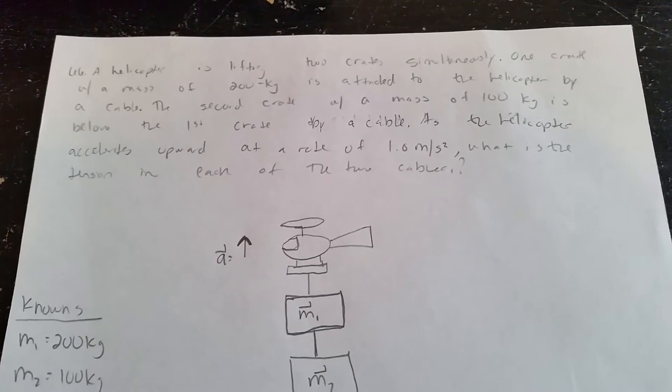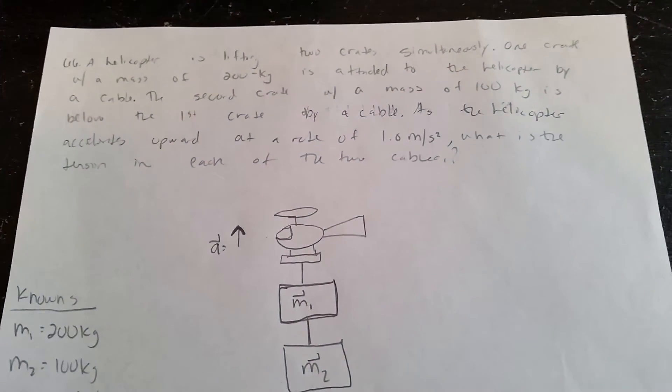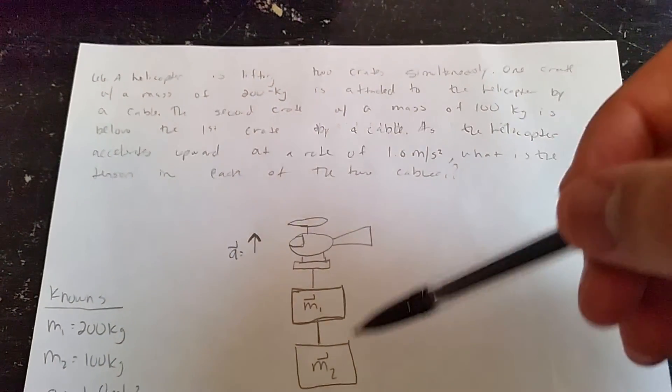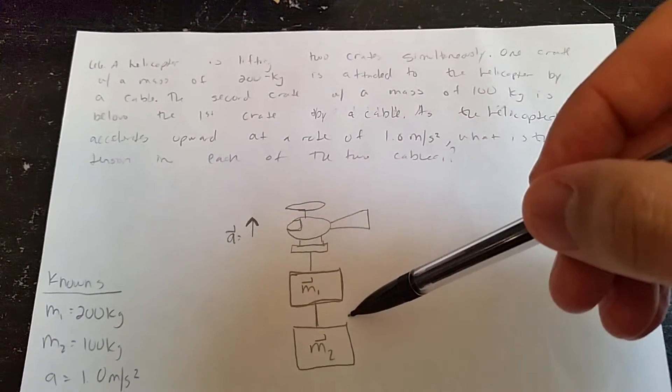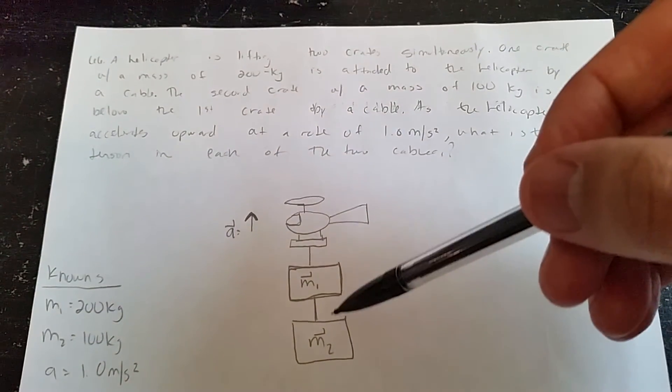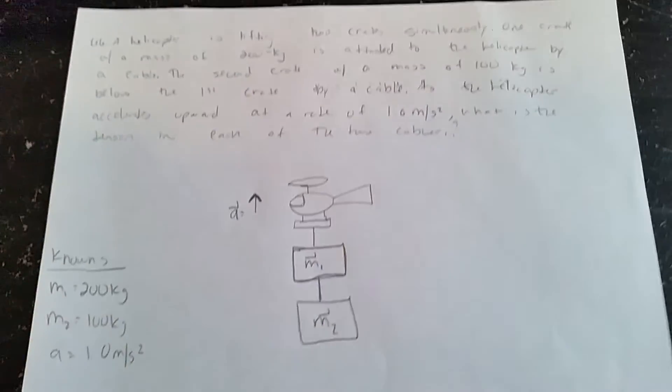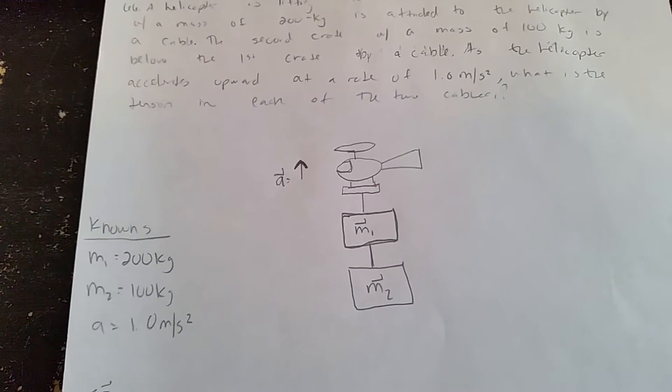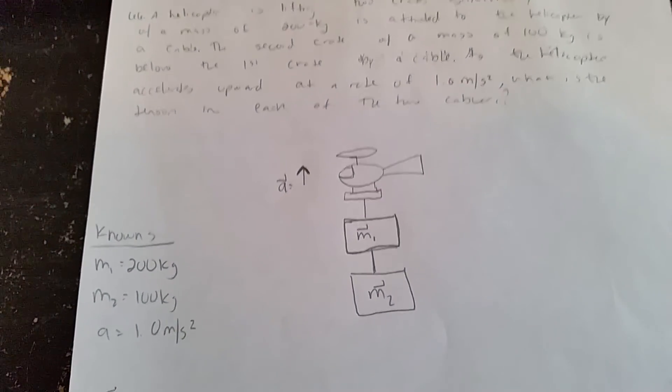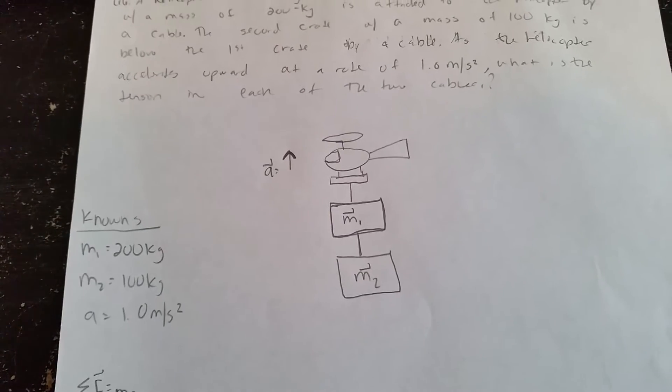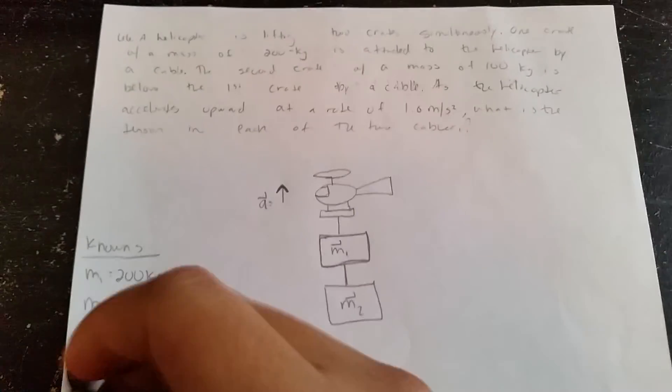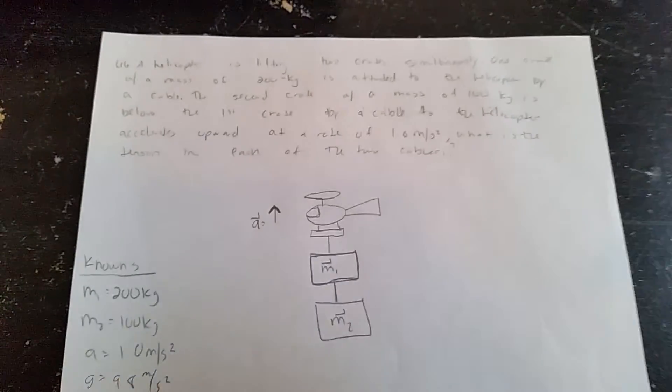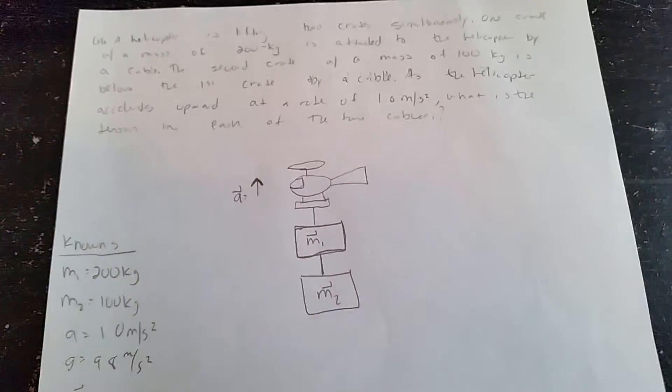What is the tension in each of the two cables? So we're looking for tension in one and then the second tension right here between mass one and mass two. So I have my known values here: mass one is 200 kilograms, mass two is 100 kilograms, acceleration is 1.0 meters per second squared, and gravity is equal to 9.8 meters per second squared.